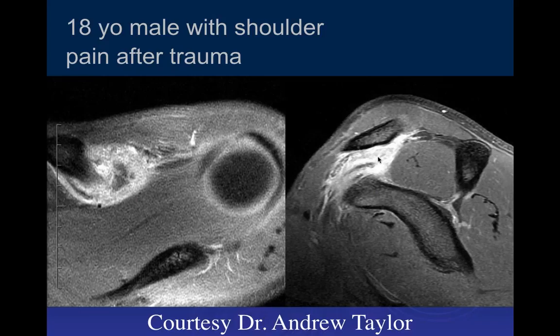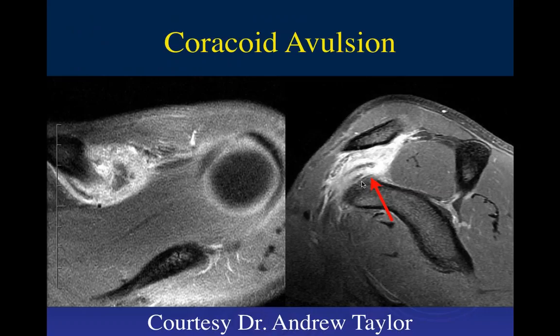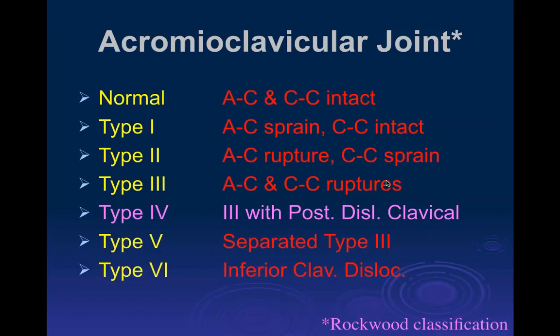With a Type 3 injury, you typically have a tear of the ligament. In these two cases, instead of a ligament tear, there were bony fractures of the coracoid leading to instability. You can have tears of the CC ligaments or bony avulsions — both causing the same result and classified as Type 3.